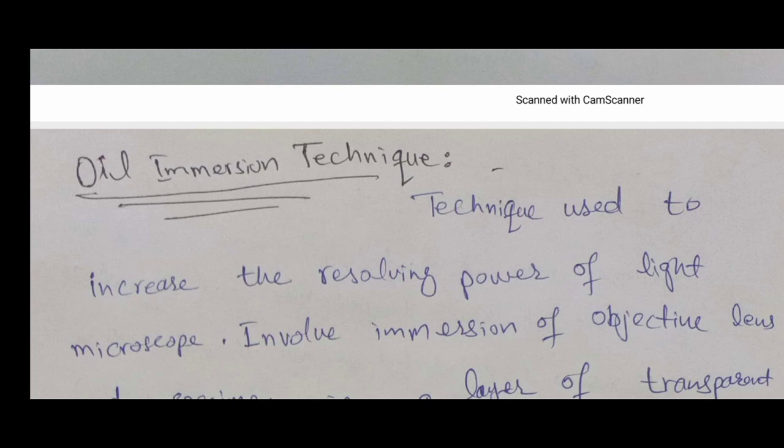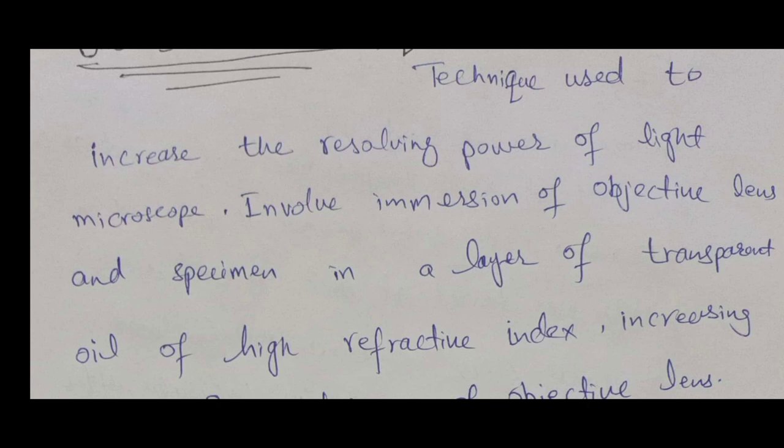What is the oil immersion technique? Its use is to increase the resolving power of the microscope. In this technique, we immerse the objective lens and the specimen in a layer of transparent oil of high refractive index. In this way, the numerical aperture of the objective lens increases, and as a result the resolution power of the microscope also increases.